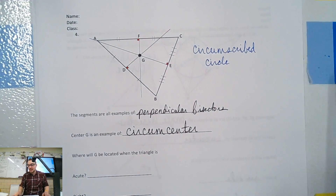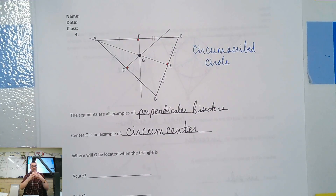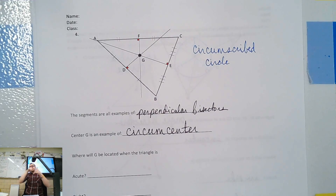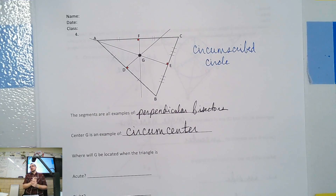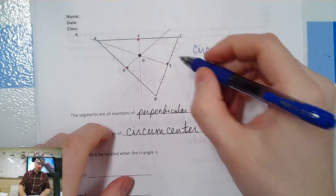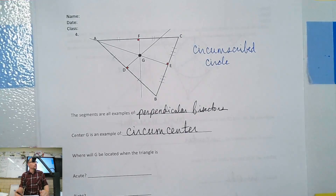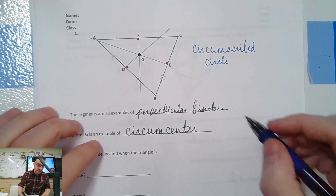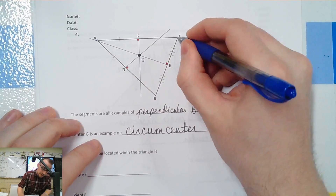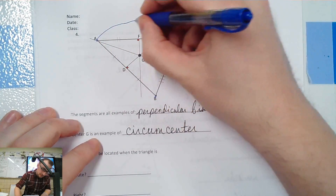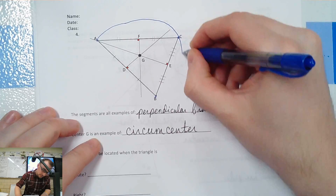A circumscribed circle — an inscribed circle is drawn inside, but a circumscribed circle goes around. Think circumnavigate around the globe — circum means all the way around, like Magellan. Circumscribed means to draw something all around. So we're going to draw a circle around the triangle — it's going to go from every single vertex.